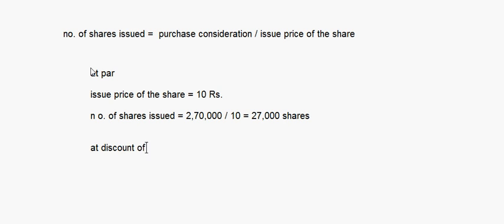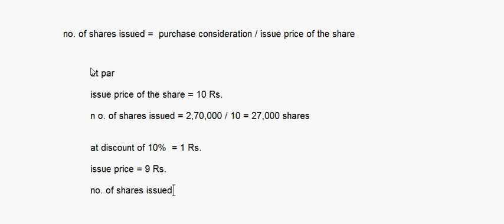When shares are issued at a discount of 10%, the discount is 10% of rupees 10, which is rupees 1. So the issue price becomes rupees 9. The number of shares issued will be 2,70,000 divided by 9, which comes to 30,000 shares.